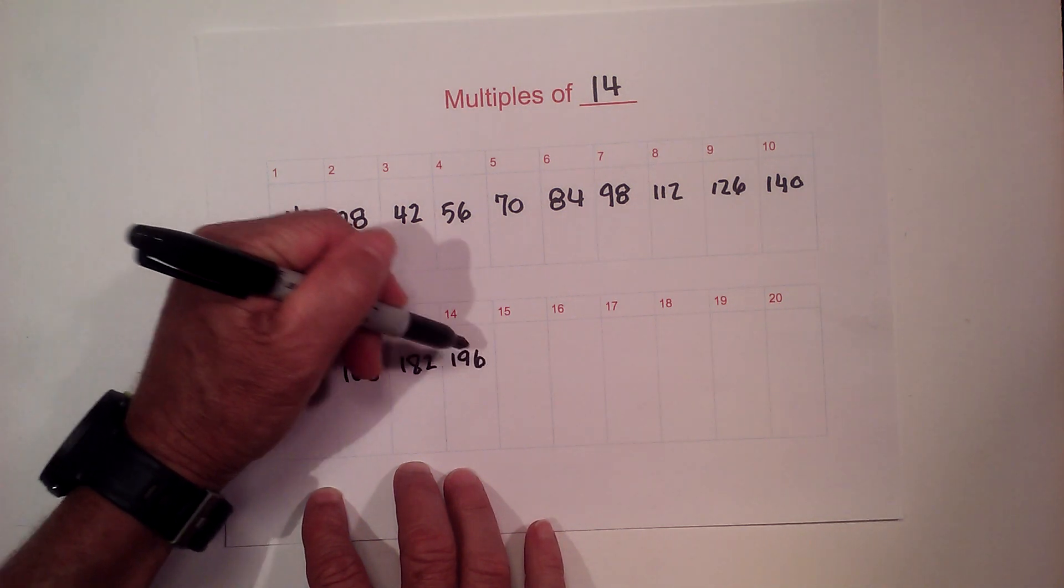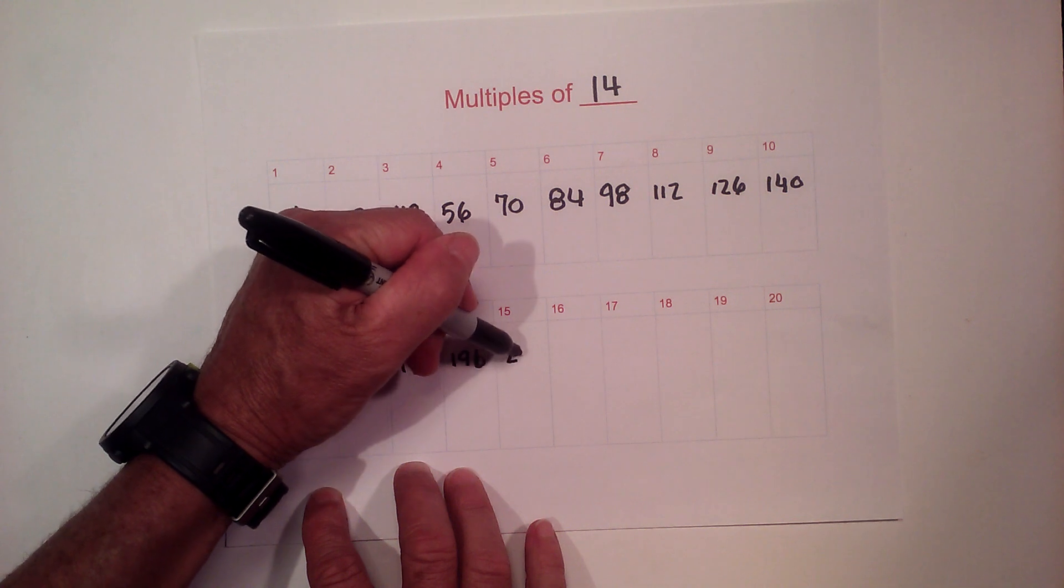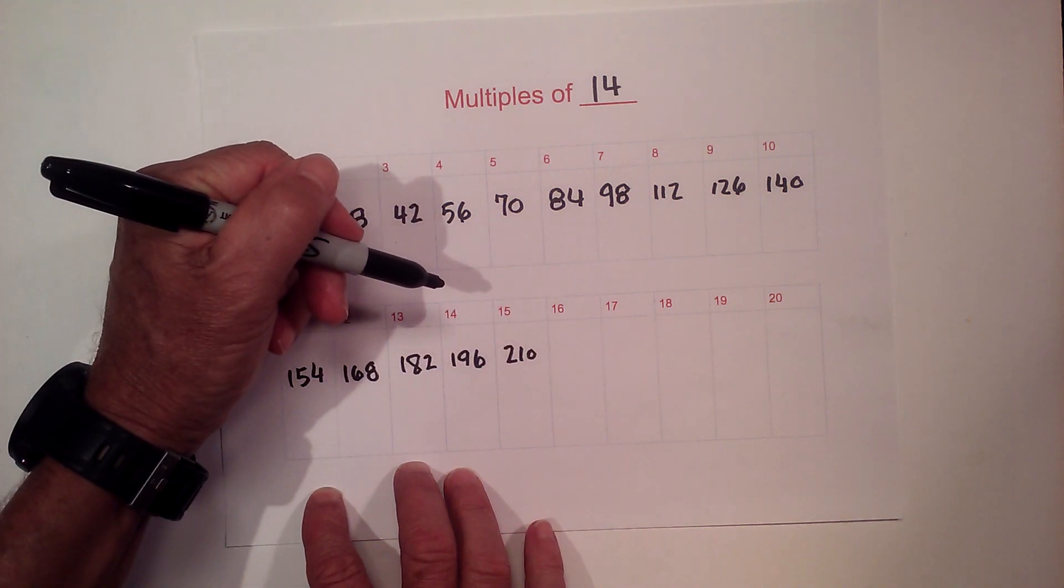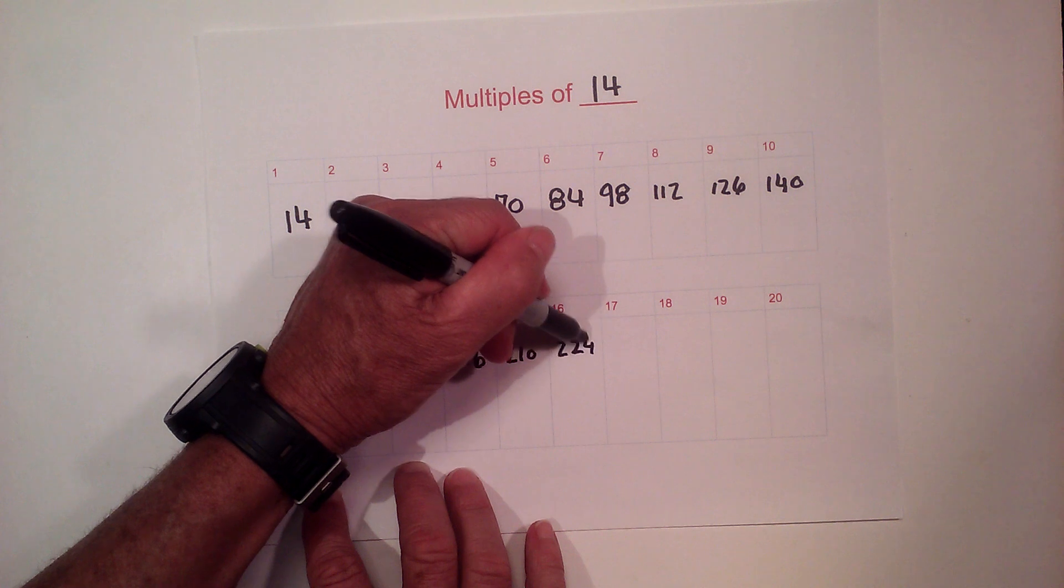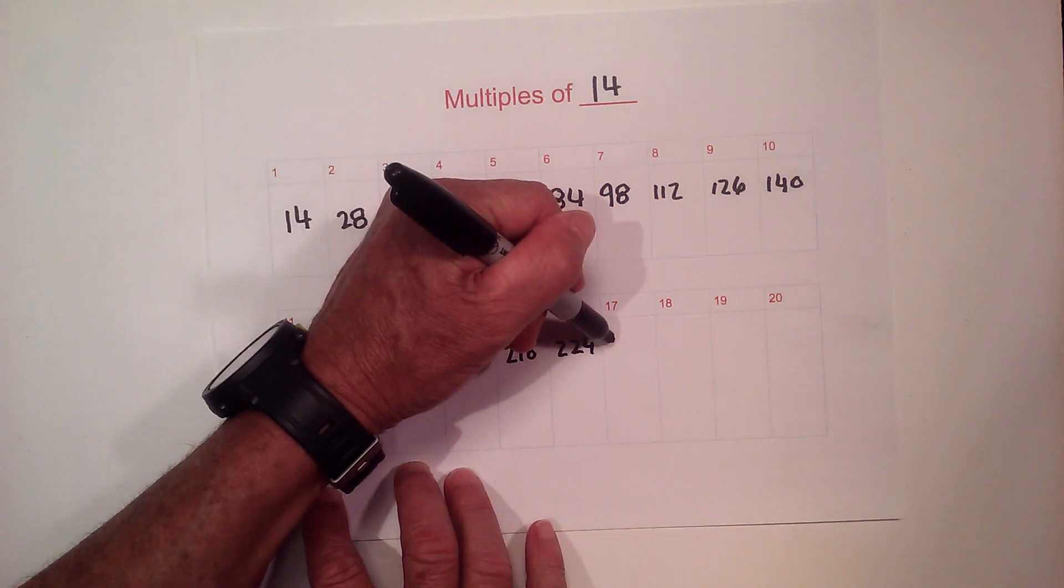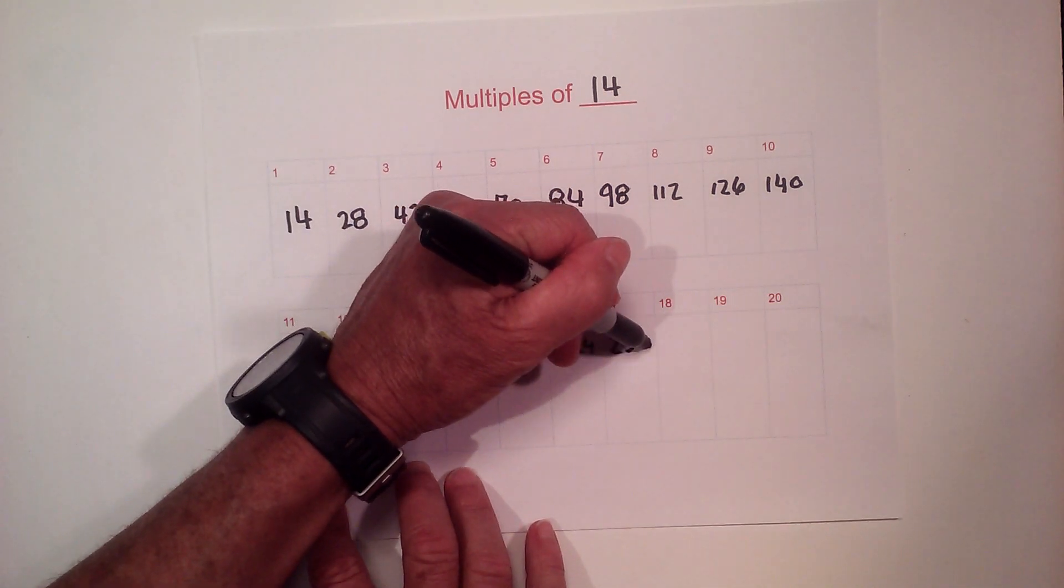Then we have 196, 210, 14 times 16 is 224, then we have times 17 is 238.